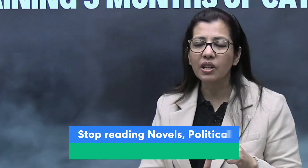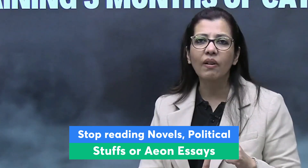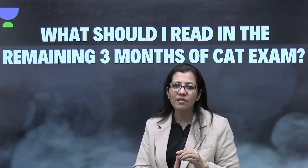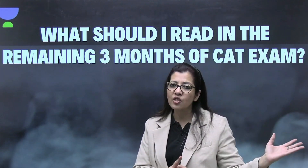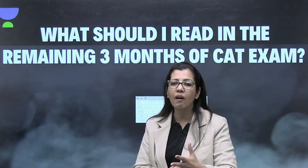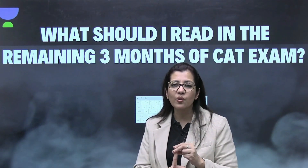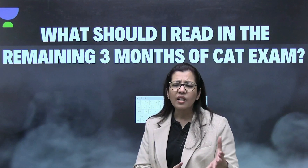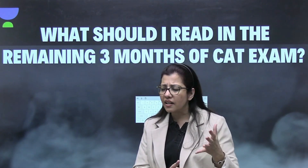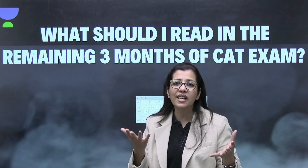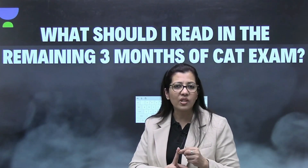Point number two: stop reading novels, The Hindu political content, or Aeon essays. CAT does give passages from Aeon, but it picks just a few paragraphs, and students get lost in the 4,000 or 5,000-word-long essays without grasping the gist. Instead, go to sources like Scientific American, Smithsonian, Guardian, New York Times, Science Direct, History Today, and Philosophy Today. These sources have easy language that you can readily understand.